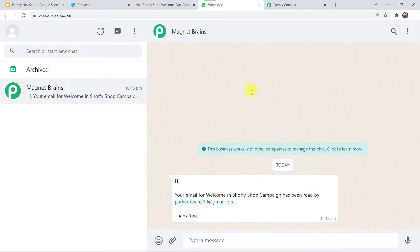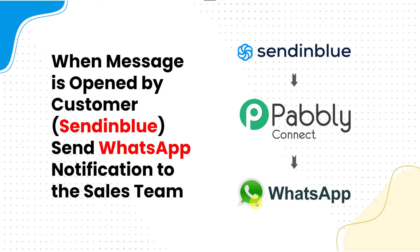This has become possible just because of automation and the integration process. To create an integration between Sendinblue and WhatsApp, we are going to use a software application named PabblyConnect. PabblyConnect is an automation and integration software which will help us integrate Sendinblue with WhatsApp automatically. The best part is it doesn't require any coding skills or programming knowledge — even a non-technical person can use it very easily.